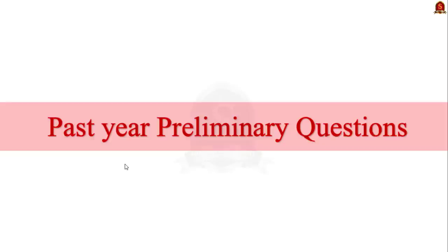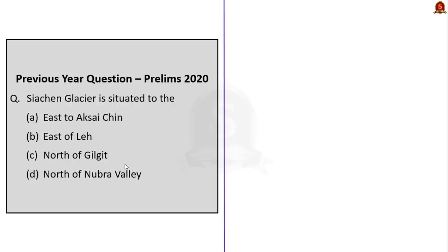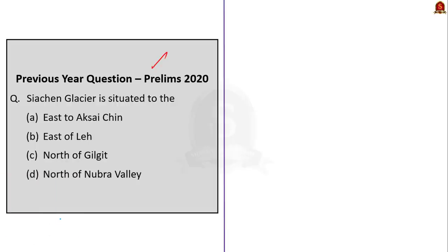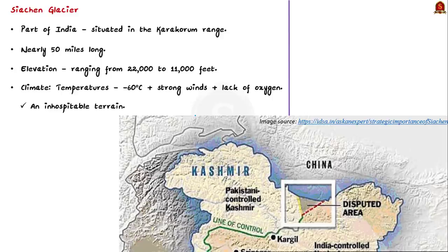So now let us start with the first question. It is based on Siachen Glacier. The question asks, Siachen Glacier is situated — four options are given. Now before discussing these options, let us have a brief introduction about Siachen Glacier and its importance.